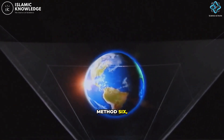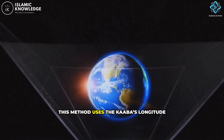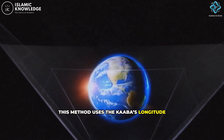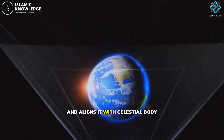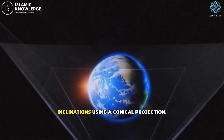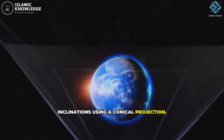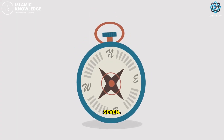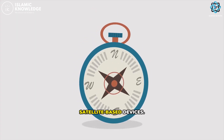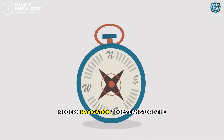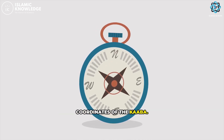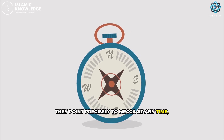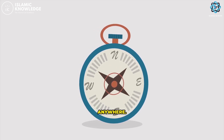Method 6: Weres' cone method. This method uses the Kaaba's longitude and aligns it with celestial body inclinations using a conical projection. Method 7: Satellite-based devices. Modern navigation tools can store the coordinates of the Kaaba, and when accessed, they point precisely to Mecca at any time, anywhere.